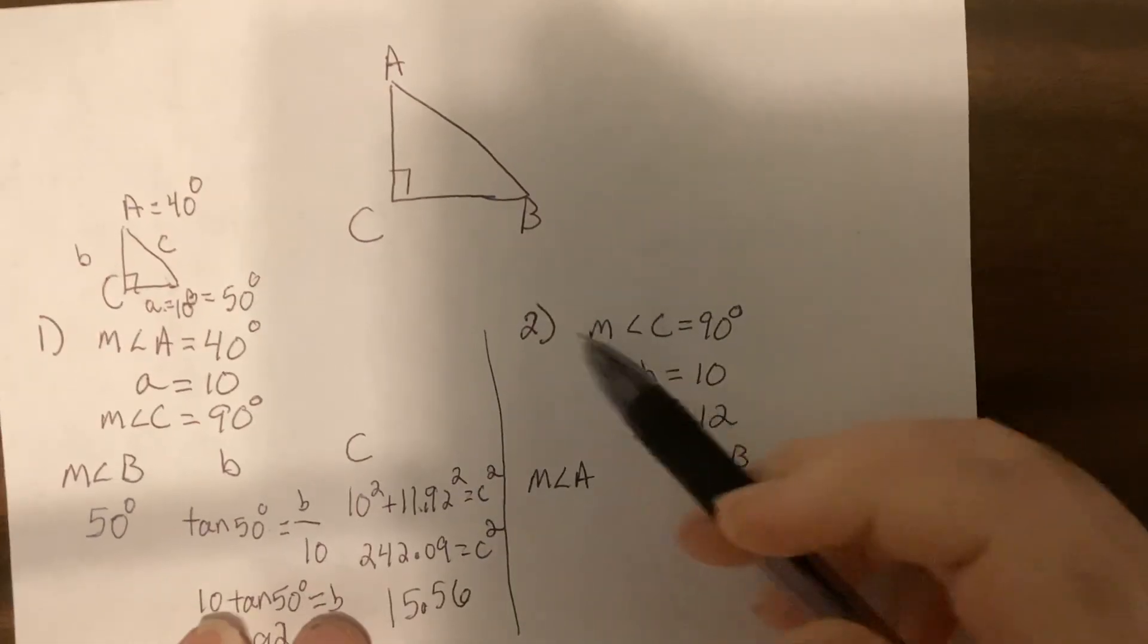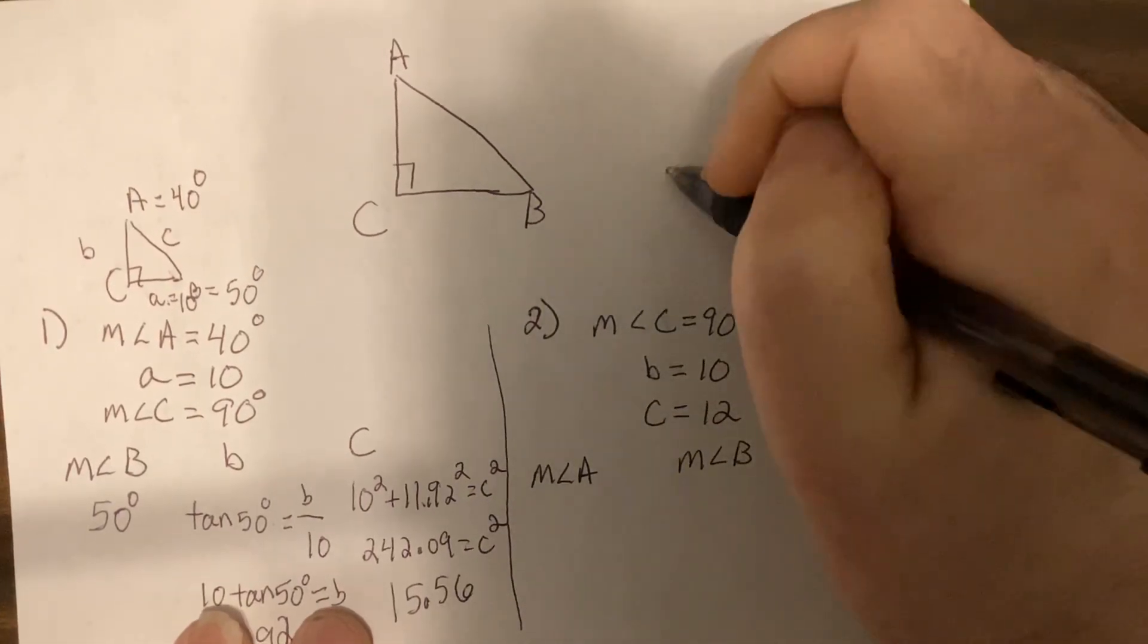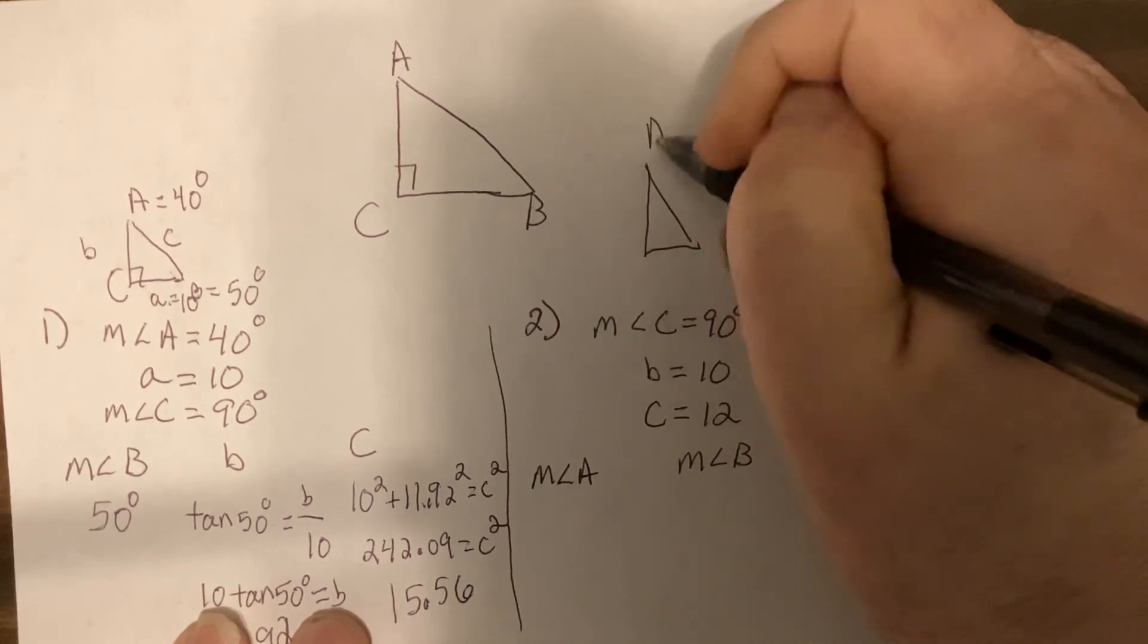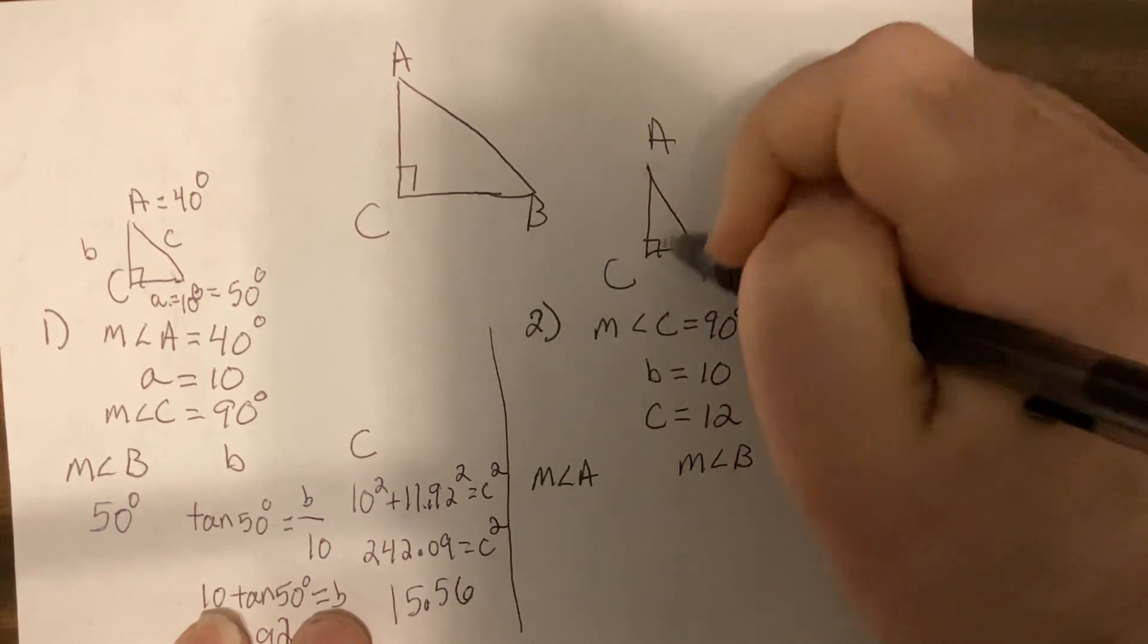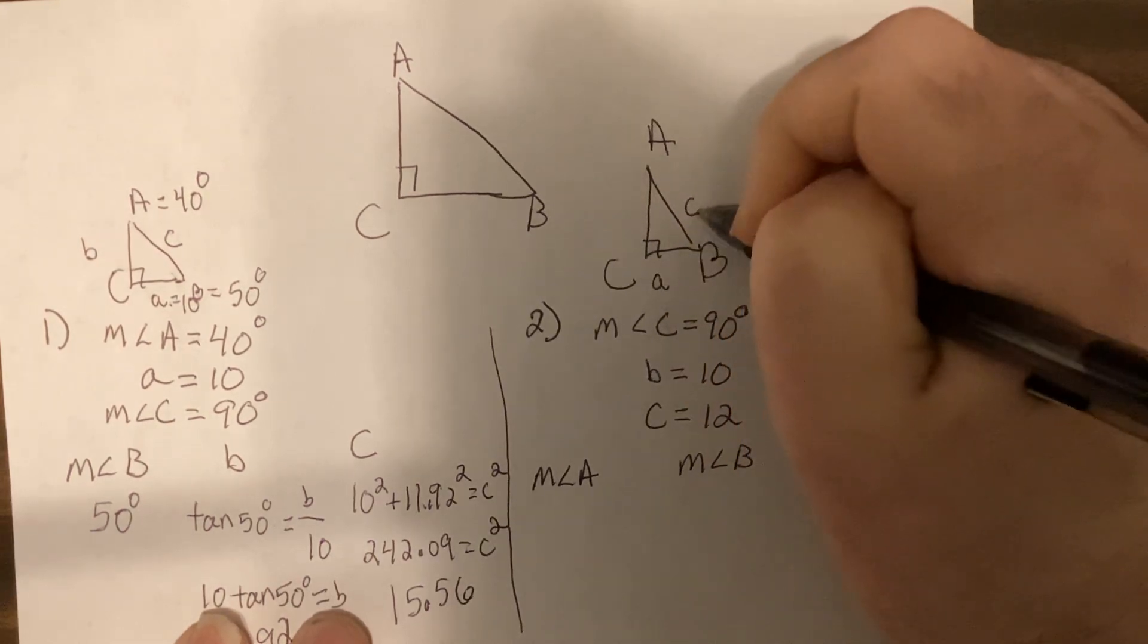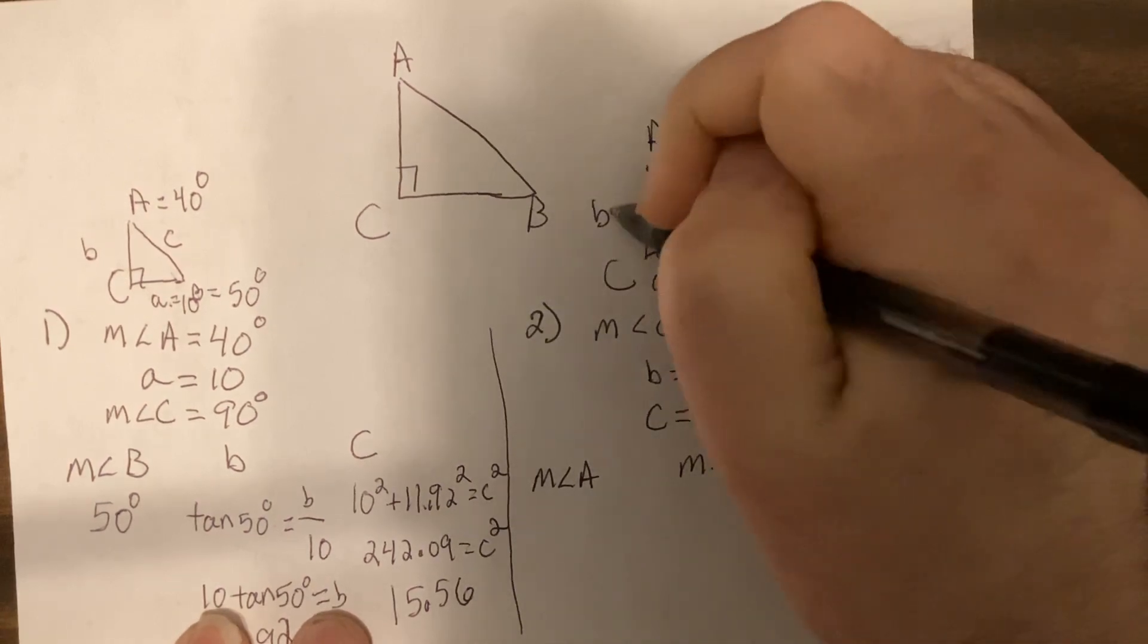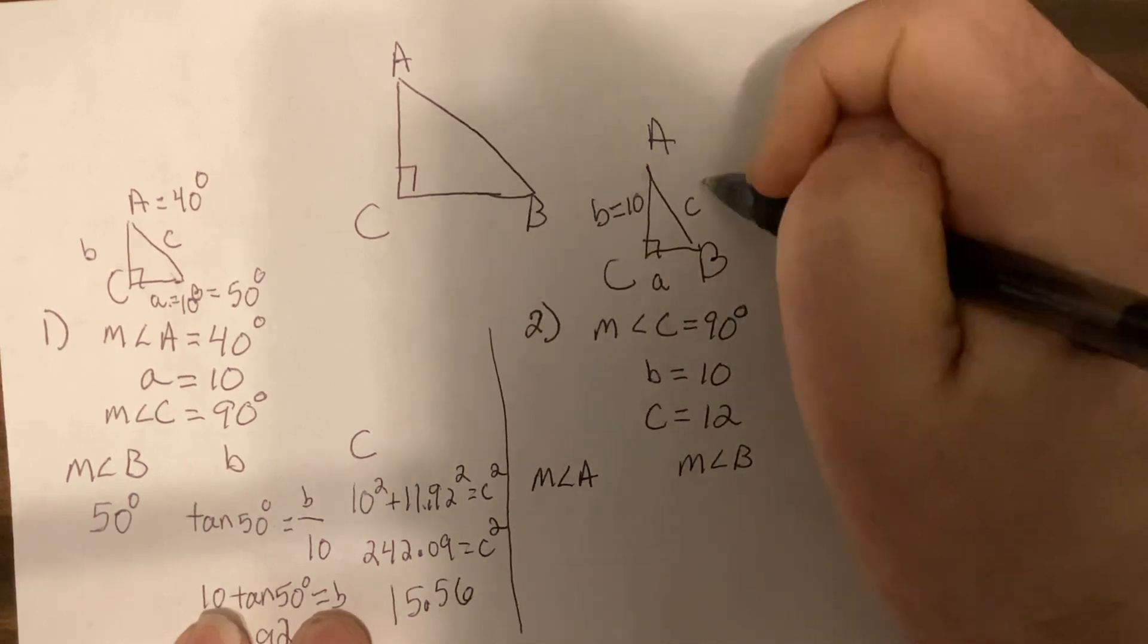Here we have another triangle A, B, C. This would be A, this is C, this is B. We're told that b is 10 and c is 12.